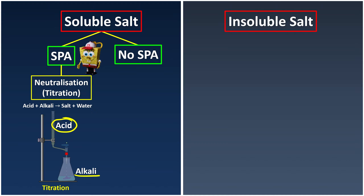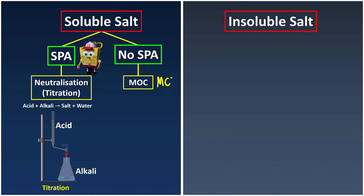If the salt does not contain SPAR, then we're going to use the method of mixing the acid with metal, metal oxide, or metal carbonate. I remember this as 'my only children does not go to SPAR,' or thinking of Malaysia's MCO period when we could not go to SPAR. So either metal, metal carbonate, or metal oxide.